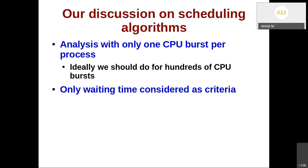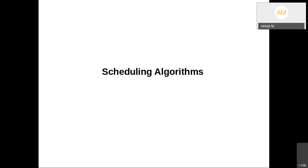We will now discuss scheduling algorithms. We will do analysis with only one CPU burst per process — ideally we should do it for hundreds of CPU bursts but we do not have that much time. Initially we are going to calculate the waiting time for different processes, evaluating only that one criterion.